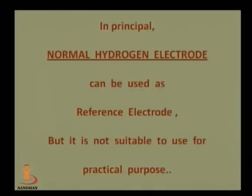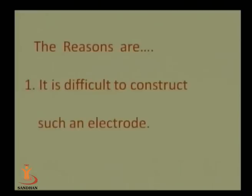In principle, the normal hydrogen electrode can be used as a reference electrode in potentiometry, but it is not suitable for practical use. There are several reasons for this. First, it is difficult to construct such an electrode in the laboratory. Second, the platinum wire used in the electrode is easily affected by the presence of substances like arsenic oxide.